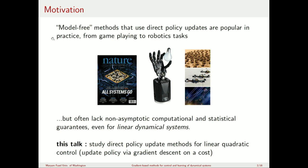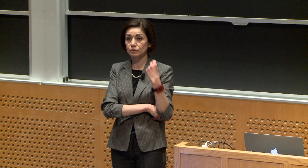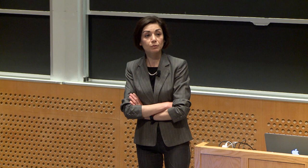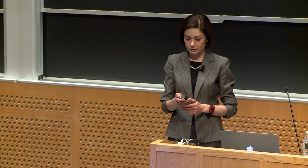But often these approaches lack statistical and computational guarantees, even when the dynamics is very simple, like linear dynamical systems. In this talk, we will look at gradient descent — meaning we would like to do an update on the policy in order to improve some cost for the controller. The control policy update uses gradient descent, and we will study direct policy updates for the linear quadratic regulator problem.